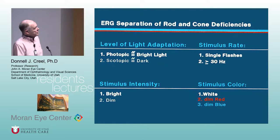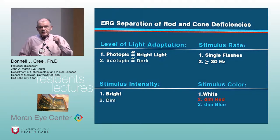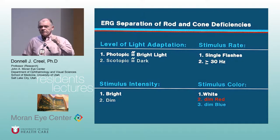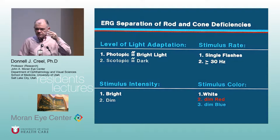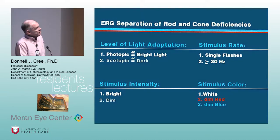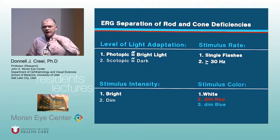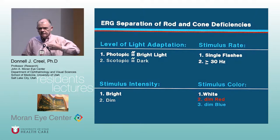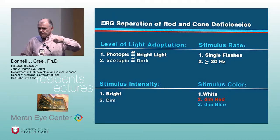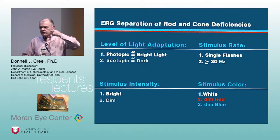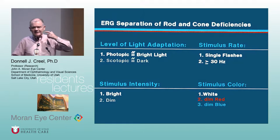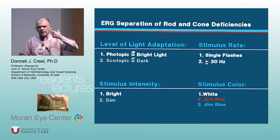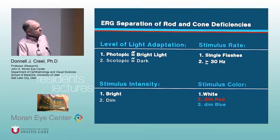Cones are fast and really sensitive in a light situation, but poor in a dark situation. A rod is three logs — a thousand-fold more sensitive. Cones can also recover quickly, whereas rods can't. Under no condition can a rod recover and refire at even 20 per second; its upper limit is about 18 per second. Cones can easily refire in a normal person up to 70 to 100 per second.